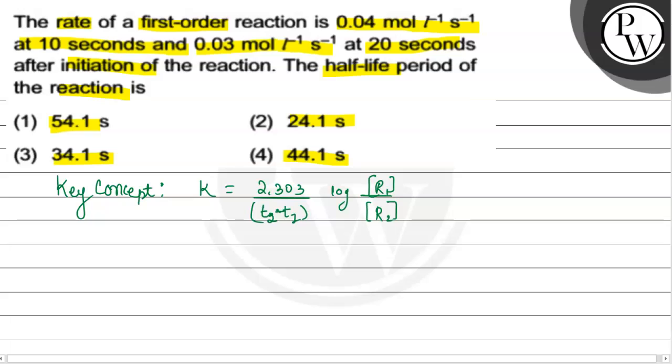So we know that T2 minus T1 is the time period here. And the other formula that we should know: half-life period for first order reaction is 0.693 upon K, that is rate constant for first order.